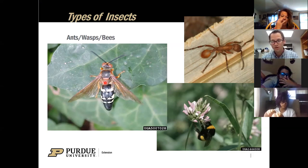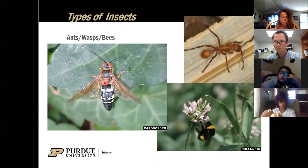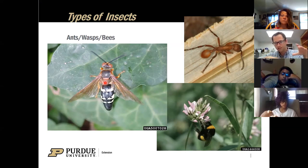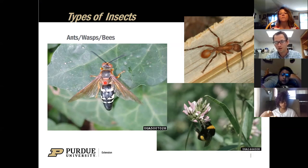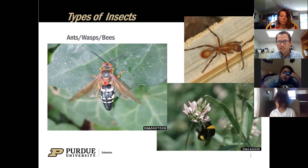This wasp here is called a cicada killer. They get pretty big - they eat cicadas, that other type of insect you hear making noise at night in summer. They'll kill cicadas, dig holes in the sand, and bury them in there. They might look scary but unless you try to catch them they won't bother you. A lot of these insects - if you leave their nest alone, they won't hurt you.